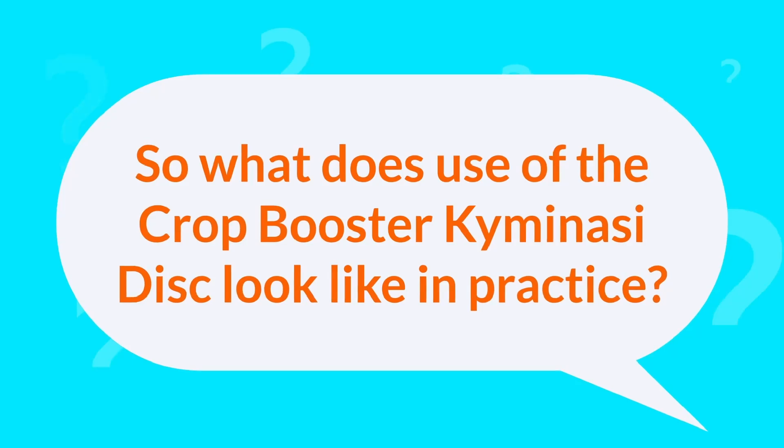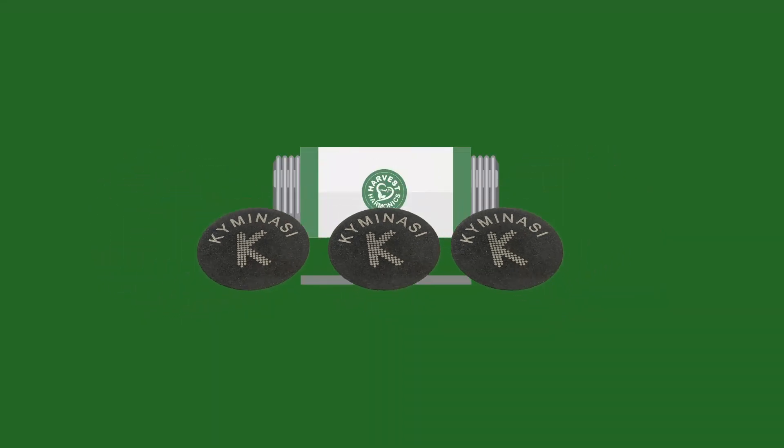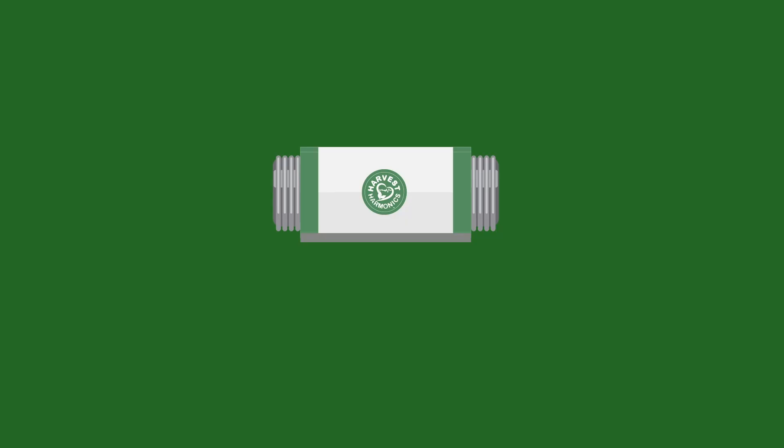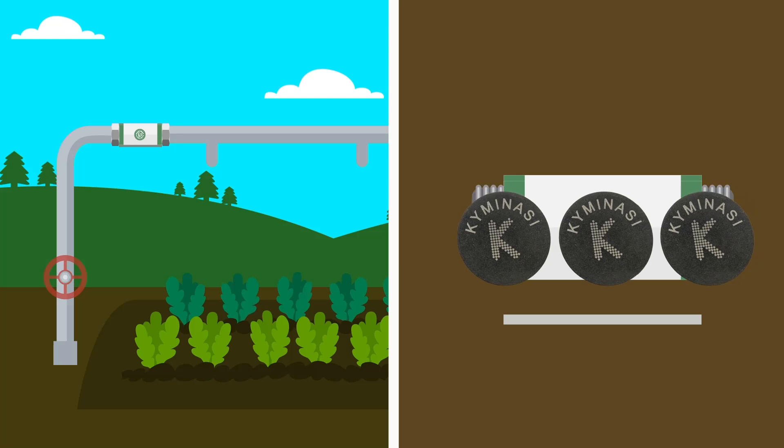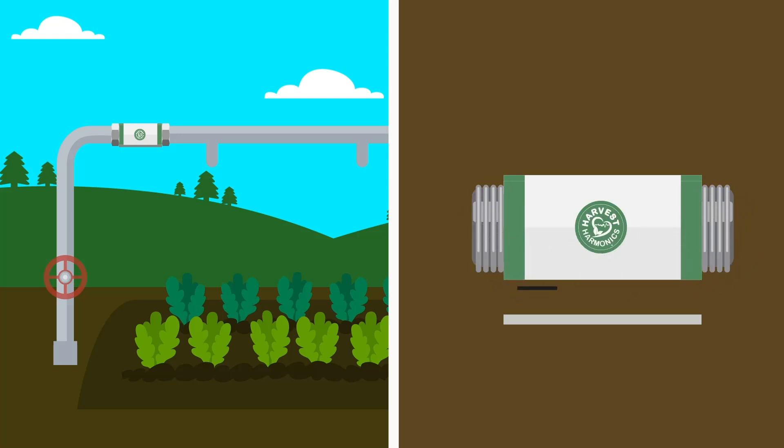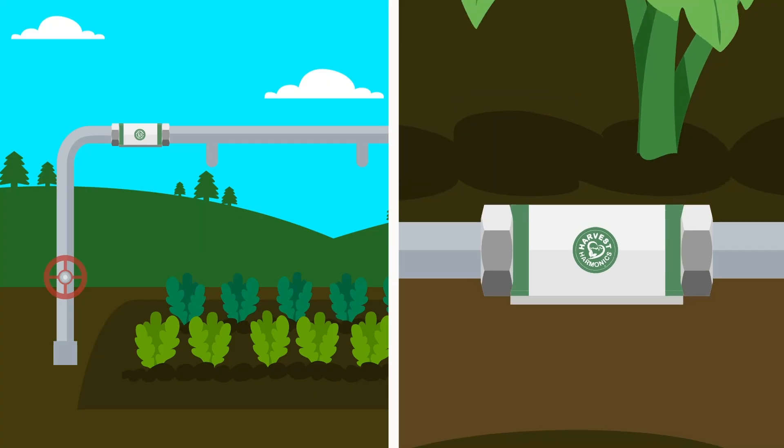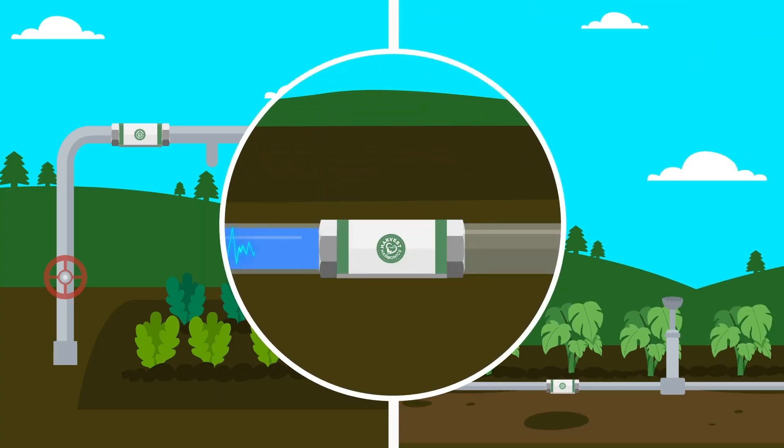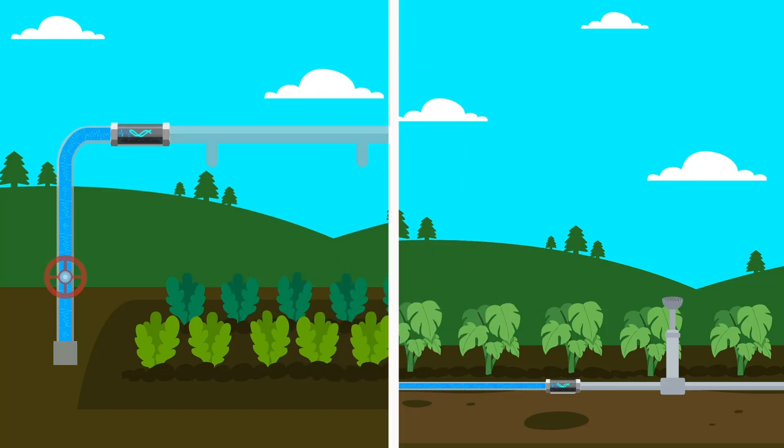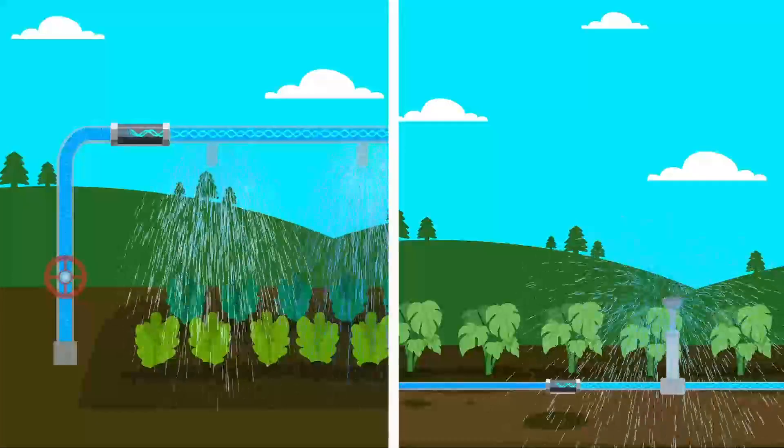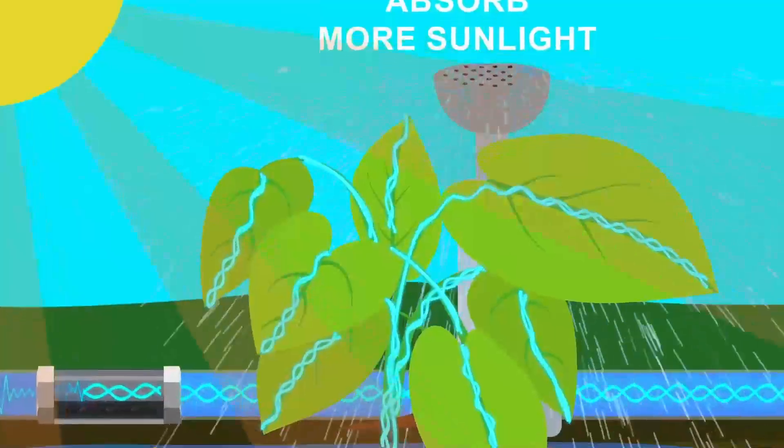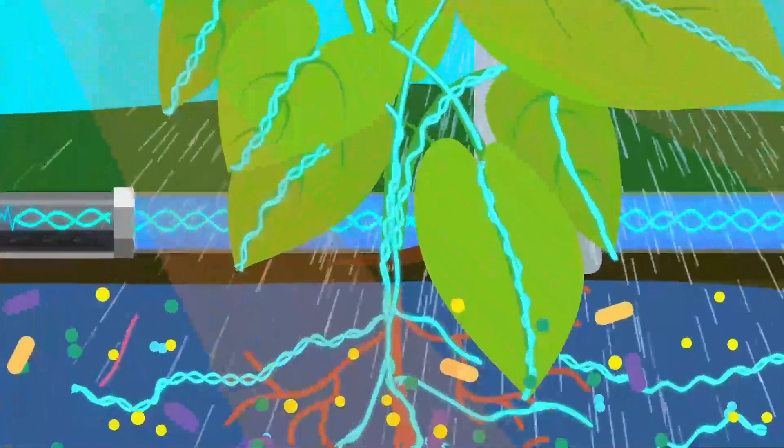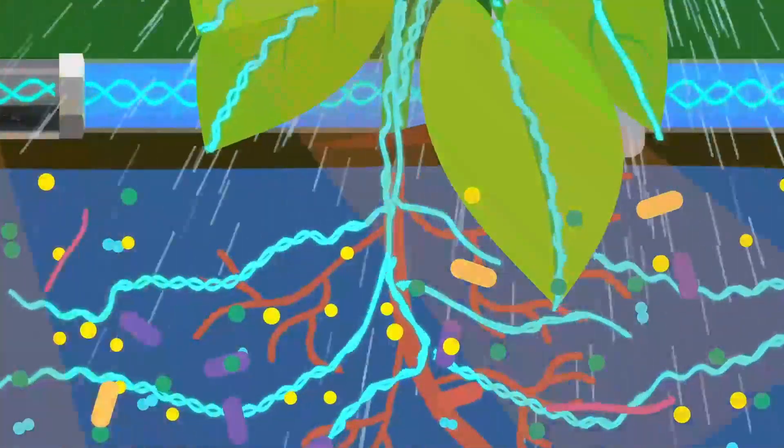So what does use of the Crop Booster Kimanasi disc look like in practice? Firstly, a farmer will get a module that can attach to any type of irrigation system in the world. The Kimanasi disc is inserted into the module, the irrigation turned on, and the water flowing past the disc gets programmed. This programmed water reaches the fields and gets absorbed by the plants.